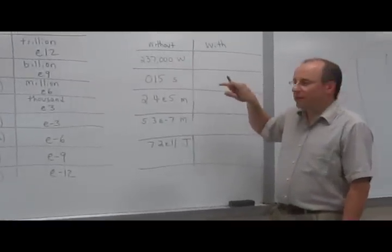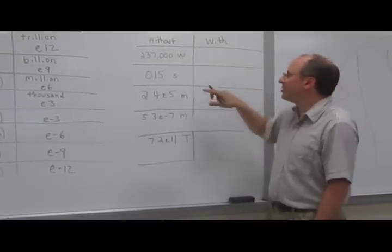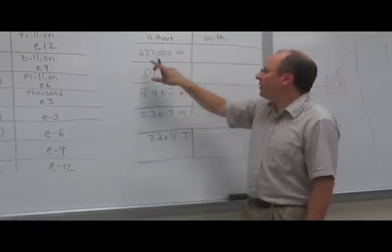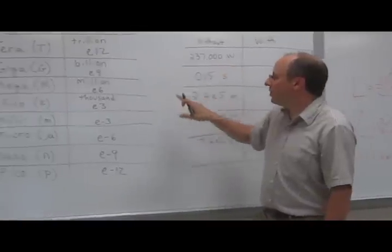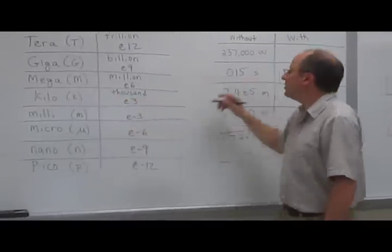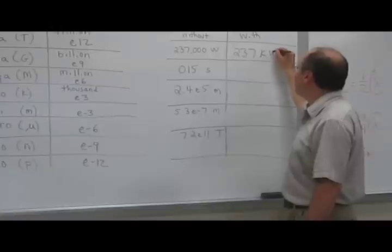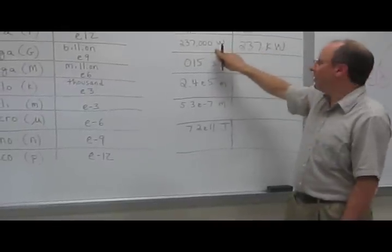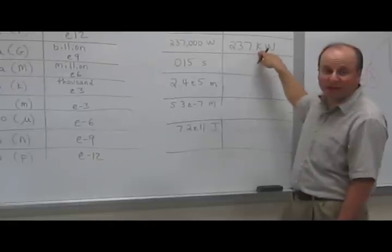So we're going to do a couple of examples of converting numbers into numbers using metric prefixes. We're going to start out with this first one. We've got 237,000 watts. And as you recall, 1,000 means kilo. So we're at 237 kilowatts. They mean the same thing.